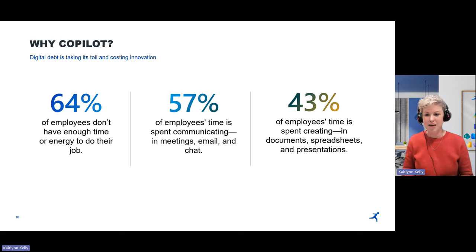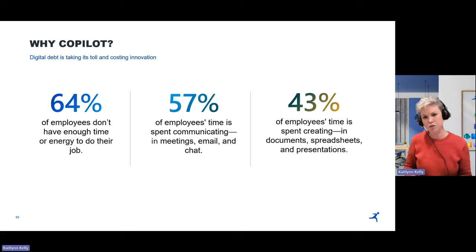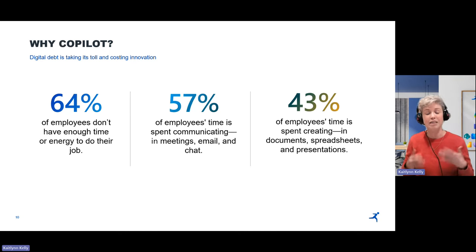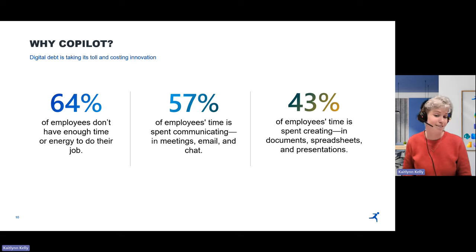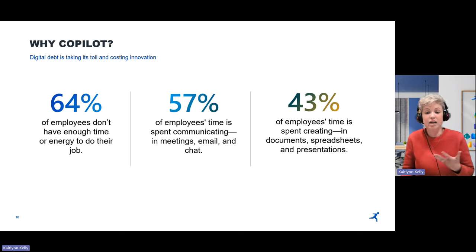We know how Copilot works, but when it comes to understanding why we want this tool, it's important to look at how employees are performing. Digital collaboration is draining: 64% of employees report not having enough time or energy to do their job; 57% are spending 50% of their time communicating — in meetings, looking through emails, doing chat; and 43% of their time is spent creating — working in Excel, Word, and PowerPoint to produce documents, spreadsheets, and presentations. A lot of time is spent in places that aren't really adding a ton of value.